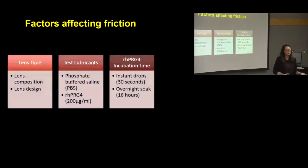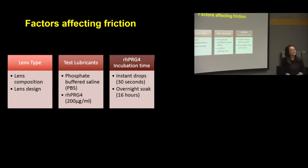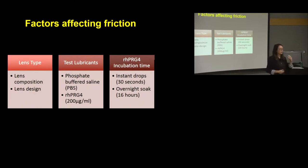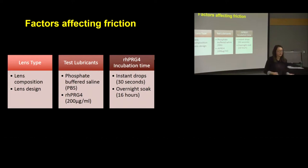There are several factors that affect lens friction in our testing: the different lens types, the lubricant used — either saline or RH-PRG4 at a concentration of 200 micrograms per milliliter — and the incubation time. Incubation time includes an instant drop condition, where RH-PRG4 is added 30 seconds before testing, and an overnight soak condition of 12 to 16 hours.